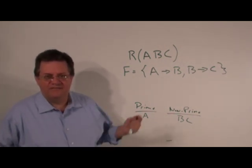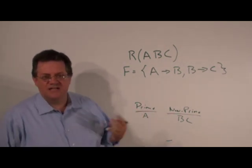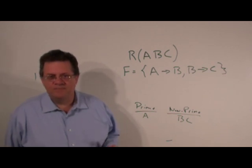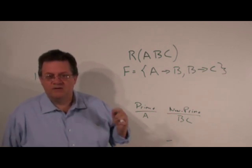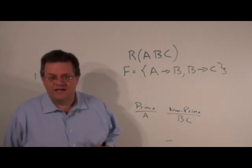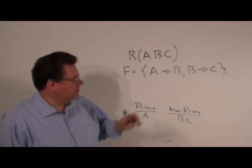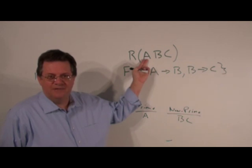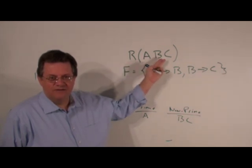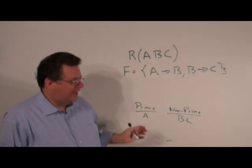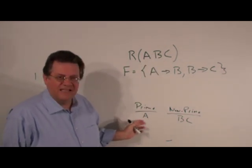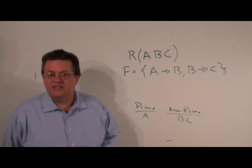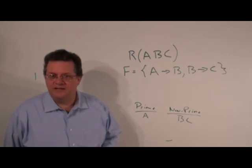Now, in the event that A was part of several different keys, it would only show up one time in the prime list. So in this case, we have R(A, B, C) with an arity of 3. If you collectively add all the prime and non-prime attributes, they'll number 3.